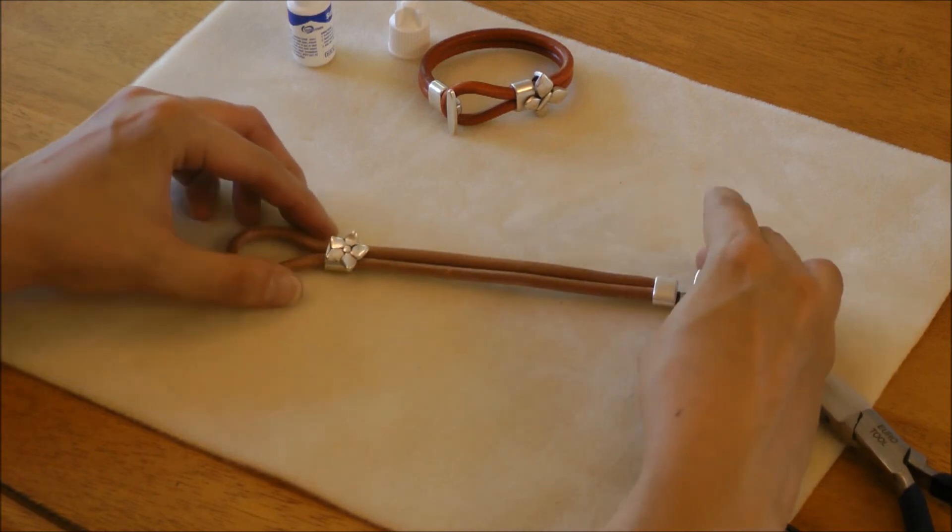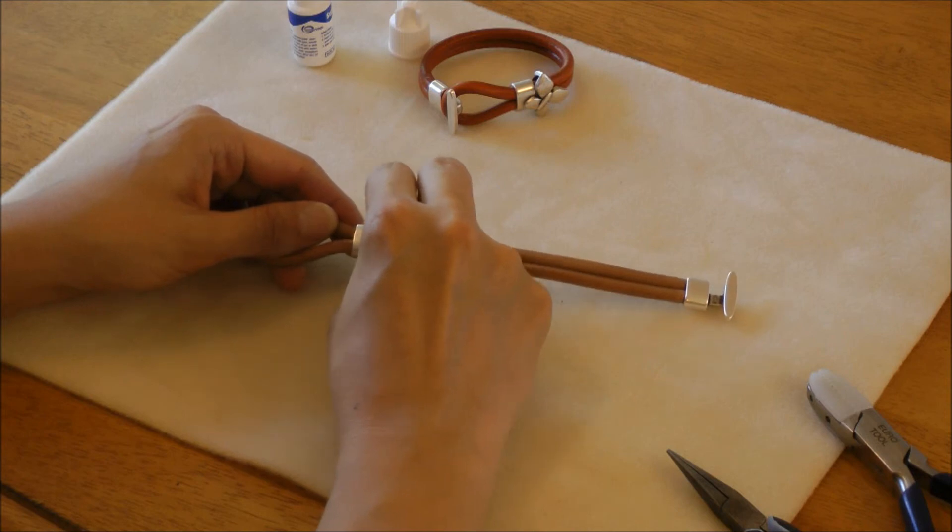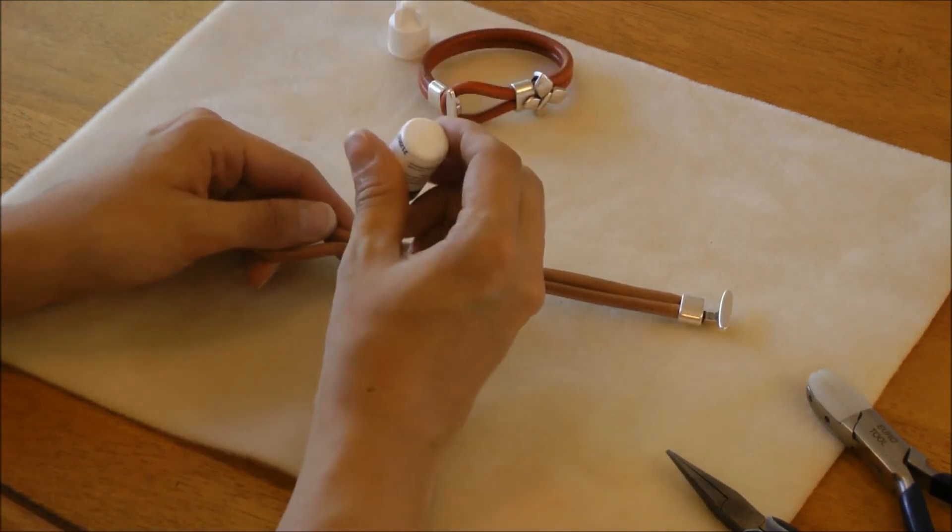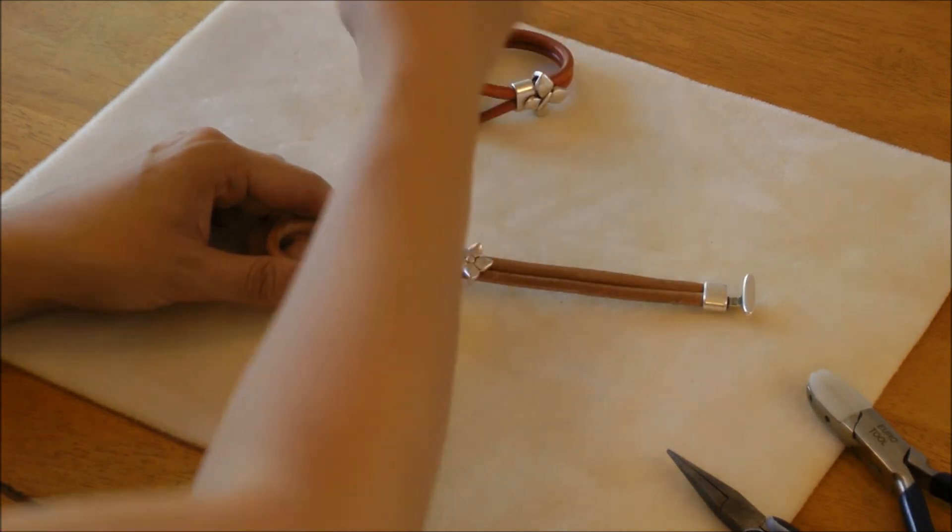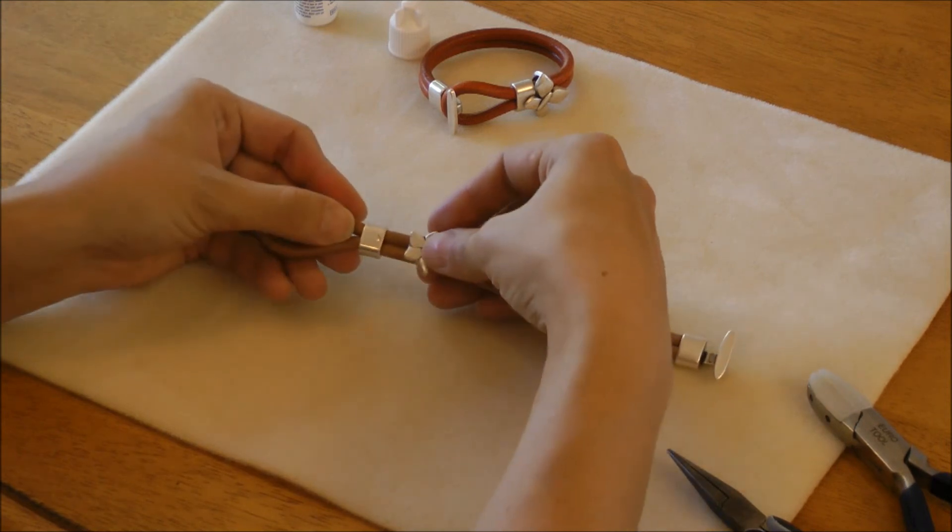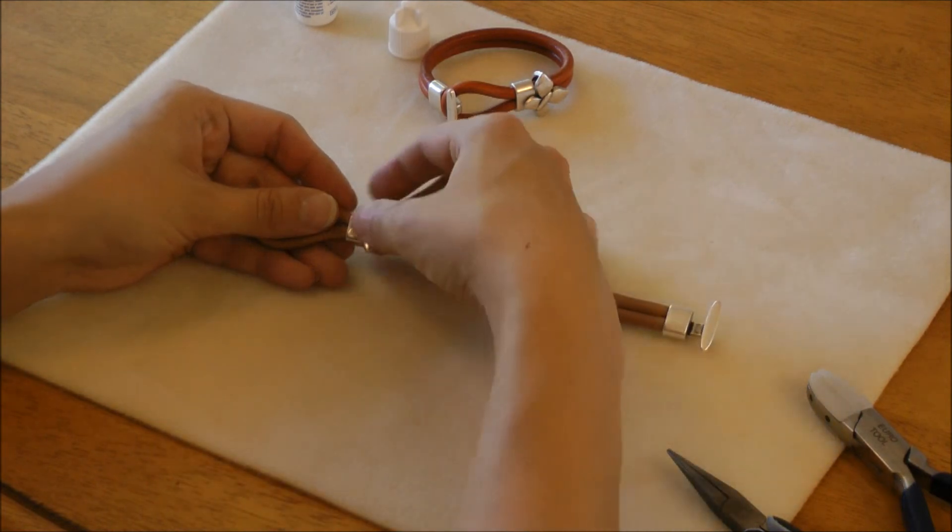The other place where you can add a drop of glue is to the slider here. You can pull it away from the second half of the clasp, add a tiny drop of glue right there and then slide the slider back over. And that glue will help to ensure that it stays there.